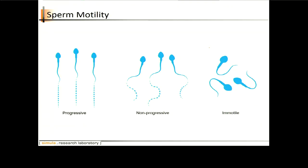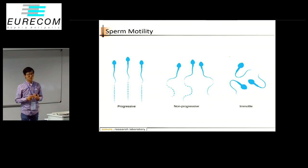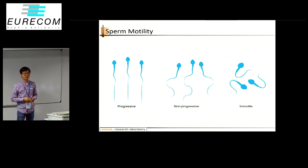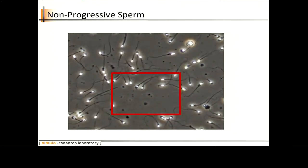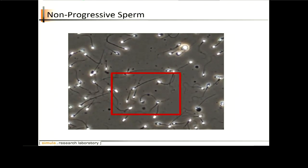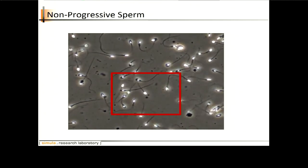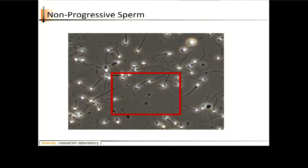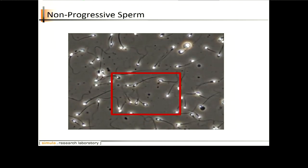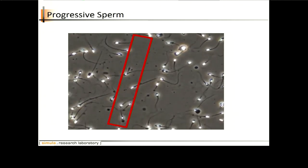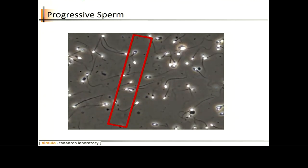In the second case, we try to understand the motility of the sperm — how it is moving. Is it moving straight forward, very progressive, or non-progressive? Or is it immotile? Here is an example of non-progressive movement — it's moving, but not in a very straightforward way. And this is the progressive sperm — you can track them moving very fast from the top.